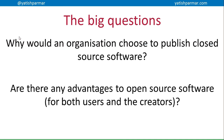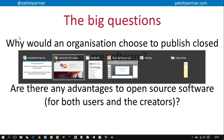So there are the big questions: why would an organization choose to publish closed source software? It relates to protecting their code, keeping away competitors, maintaining financial advantages, and maintaining security. And the advantages of open source software include more eyeballs making problems shallower, plus the speed and creativity of fixes. Thank you very much, and I look forward to sharing the next video with you.